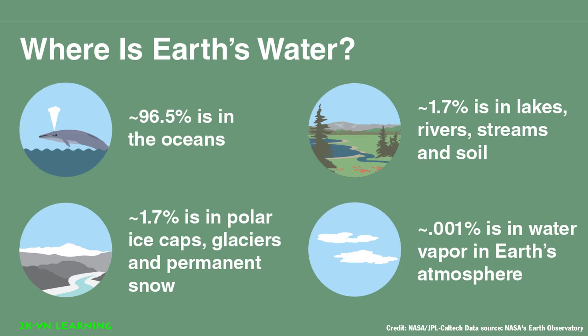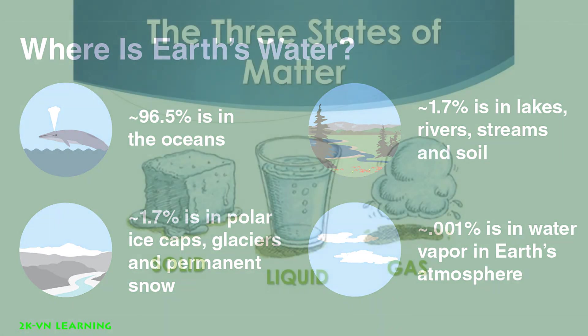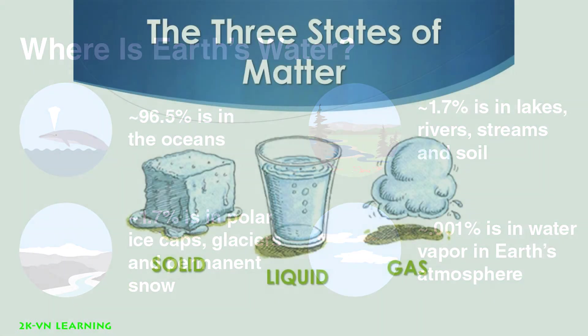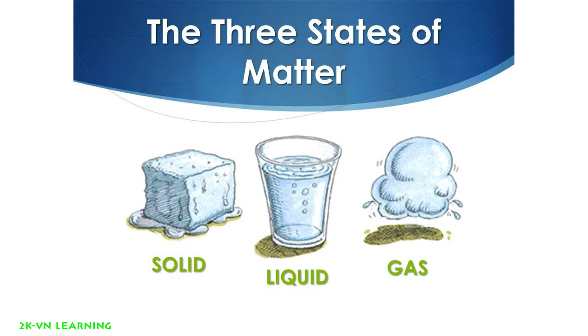0.001% is water vapor in Earth's atmosphere. On Earth, you can find water in all three states of matter: solid, liquid, and gas. These are the main three.